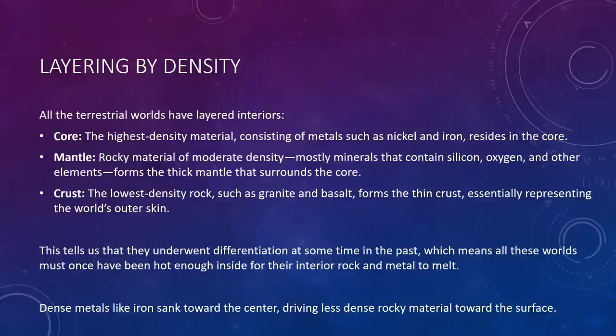All the terrestrial worlds have layered interiors. We divide the interiors into three layers according to density. First, we have the core, the centralmost region. This is the high-density material consisting primarily of metals, such as nickel and iron, that resides in the central core or the center of the planet.